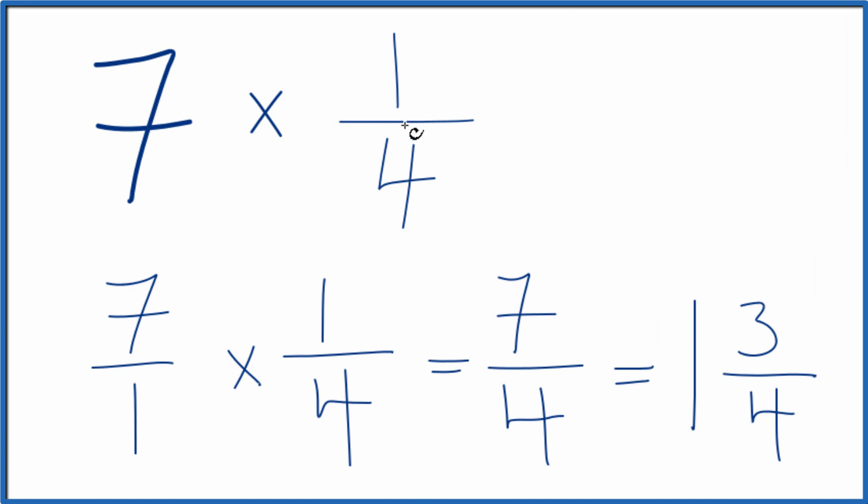So in answer to our question, 7 times 1 fourth equals 7 fourths. If you need a mixed number, you could call that 1 and 3 fourths.